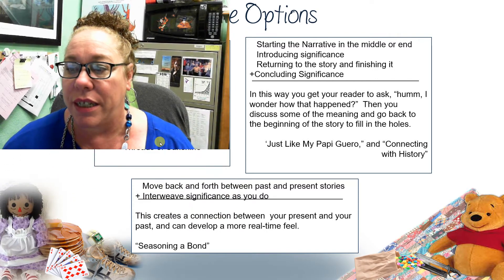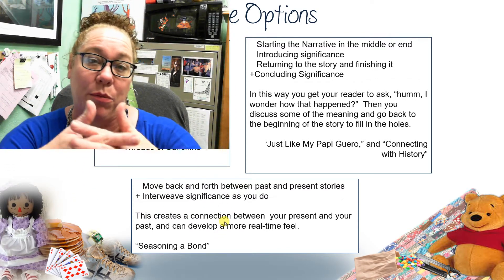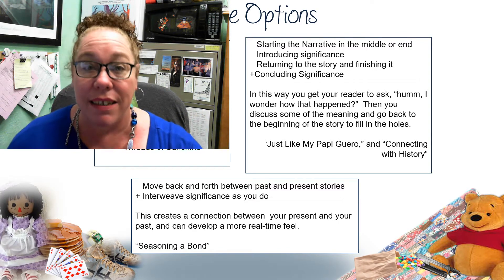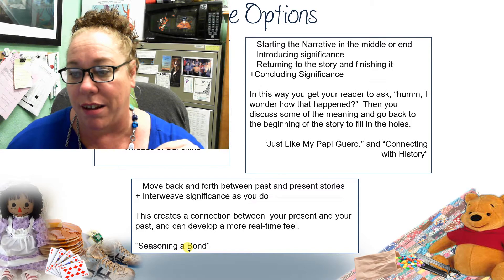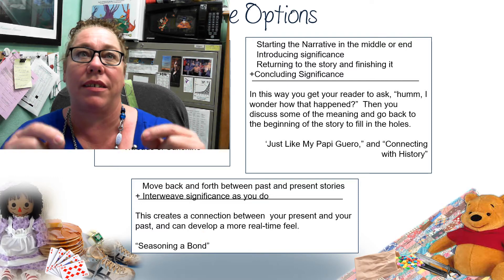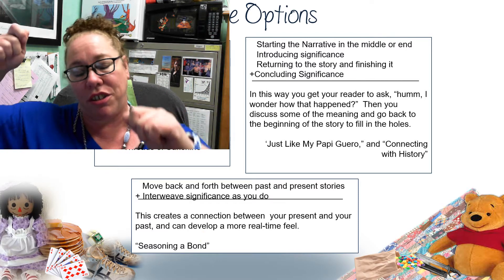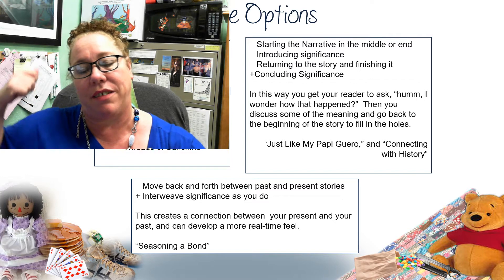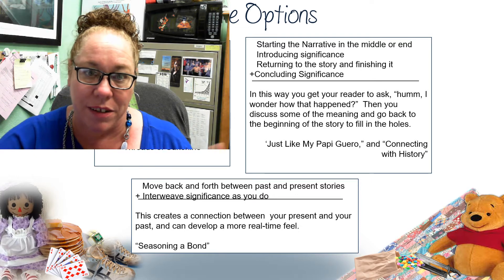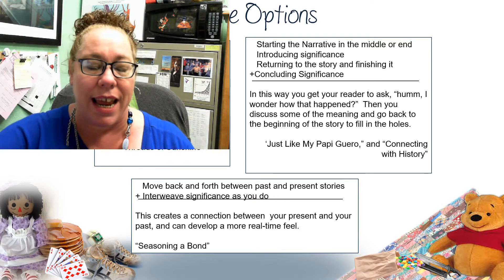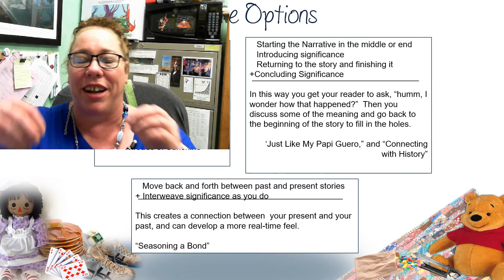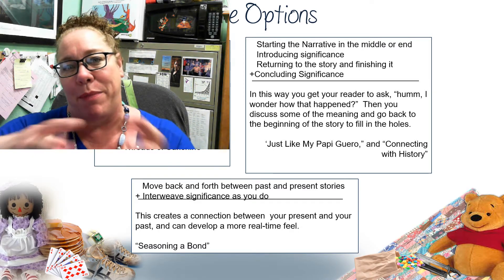Another way to do it — which is similar, and really what's happened in both of those — is that going back and forth. In Seasoning a Bond, Debbie does a great job: she starts in the present, in the moment. Then she starts doing this stuff and goes back to her childhood, something interrupts her and she's out of her headspace, her daydream of the past. Then she goes back to it, thinks about what it means, then back to the present — she gets interrupted and back and forth. So she does a kind of back and forth thing.